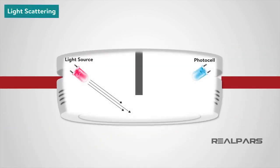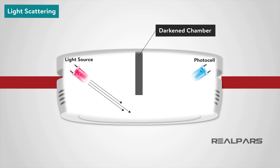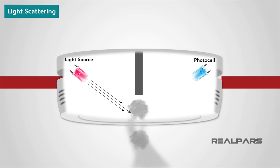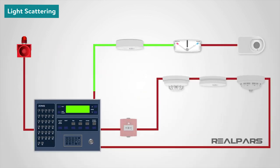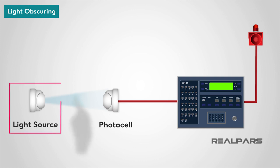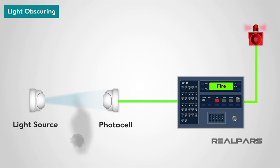The light scattering smoke detector operates on the Tyndall effect. A photocell and light source are separated from each other by a darkened chamber, such that the light source does not fall on the photocell. The passage of smoke into the chamber causes the light from the source to be scattered and fall on the photocell, whose output is used to initiate an alarm. In the light obscuring smoke detector, smoke interferes with a light beam between a light source and photocell. The photocell measures the amount of light it receives, and the variation in output is used to initiate an alarm. This type of detection can be used to protect large areas, with a light source and photocell positioned some distance apart.